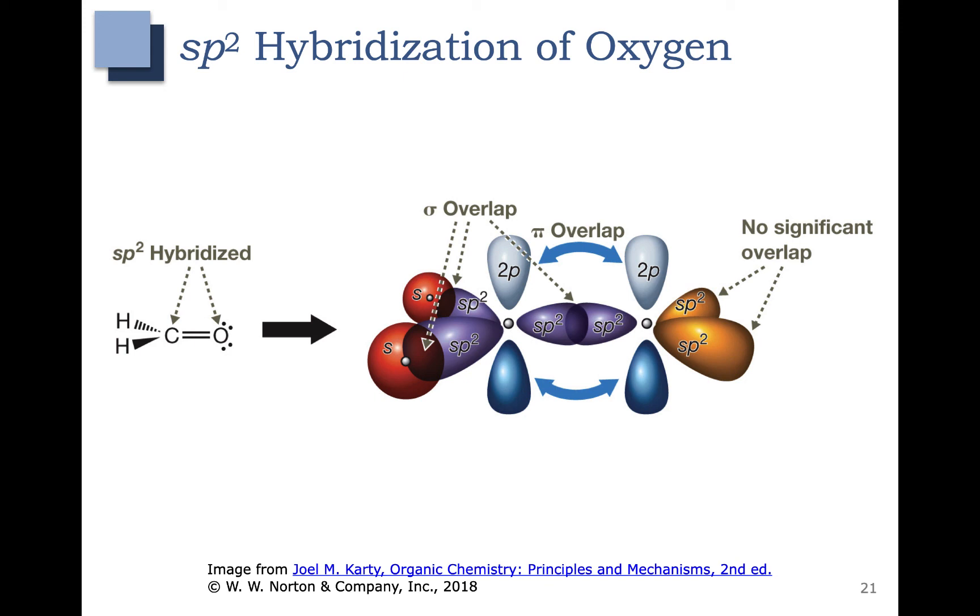What about oxygen? Oxygen has a valence of six. So that means that it has extra electrons that we have to worry about. Here's an sp2 hybridized carbon on the left. One electron in each of the sp2 hybrid orbitals and one electron in the pi bond.